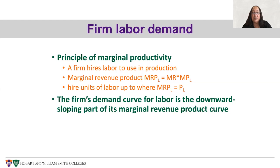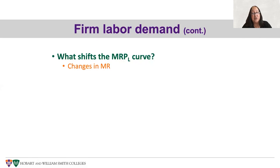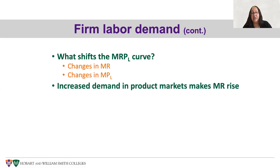That's a general rule for factor markets. The firm's demand curve for labor is the downward sloping part of its marginal revenue product curve. Firm labor demand can also shift over time, and the question is what kinds of things shift the marginal revenue product of labor curve. One thing is changes in the product market: if price and marginal revenue rise or fall, this will cause shifts in labor demand. Changes in the marginal product of labor — productivity — also shift the curve: increases in marginal product increase the firm's demand for labor, and decreases reduce it.